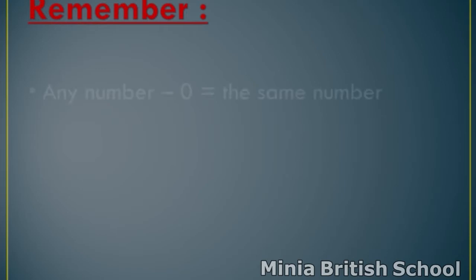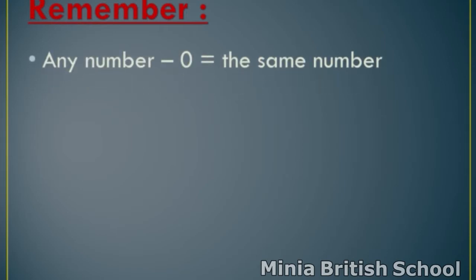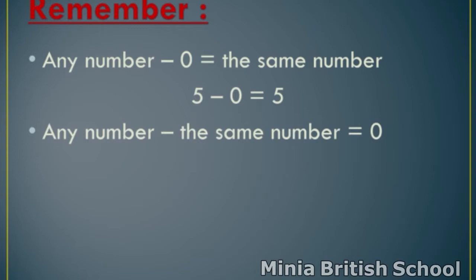Remember: any number minus zero equals the same number. Like, five minus zero equals five. Seven minus zero equals seven. And any number minus the same number equals zero. Like, six minus six equals zero. Eight minus eight equals zero.